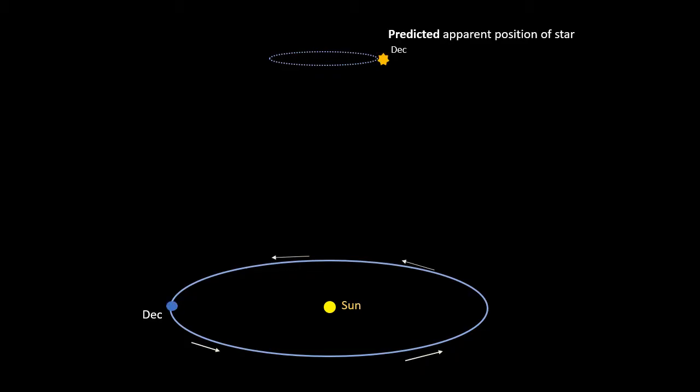So just to recap, the position shift due to parallax, which Bradley expected as the Earth goes round the Sun, is shown again.